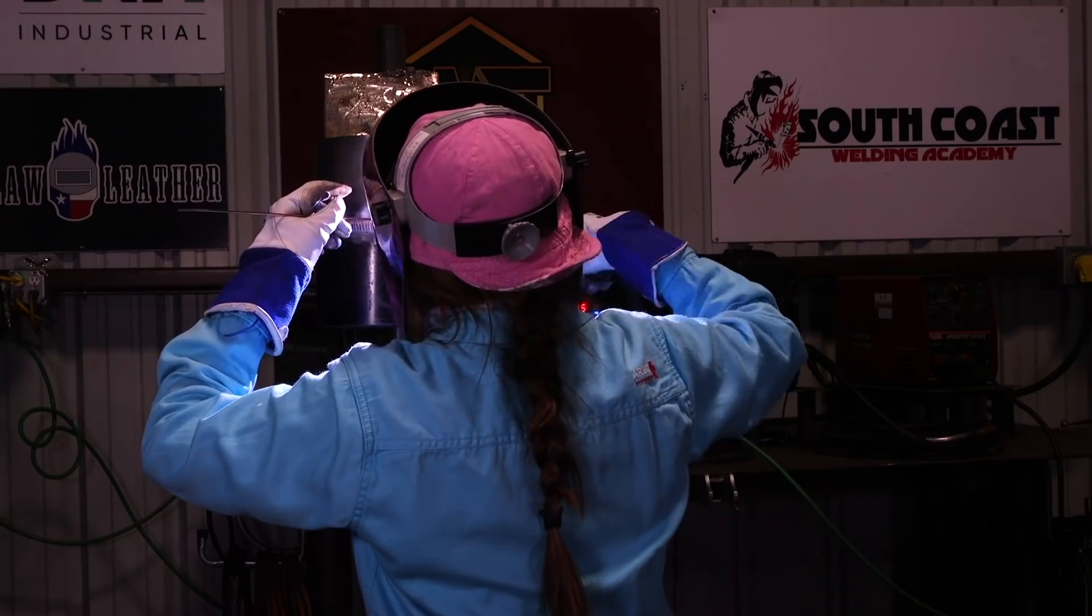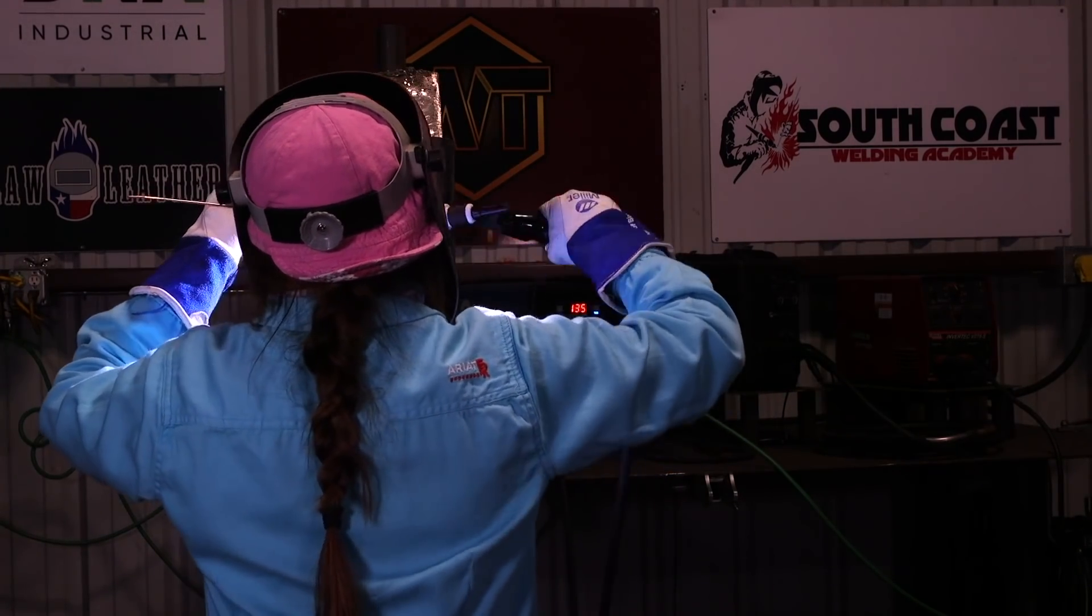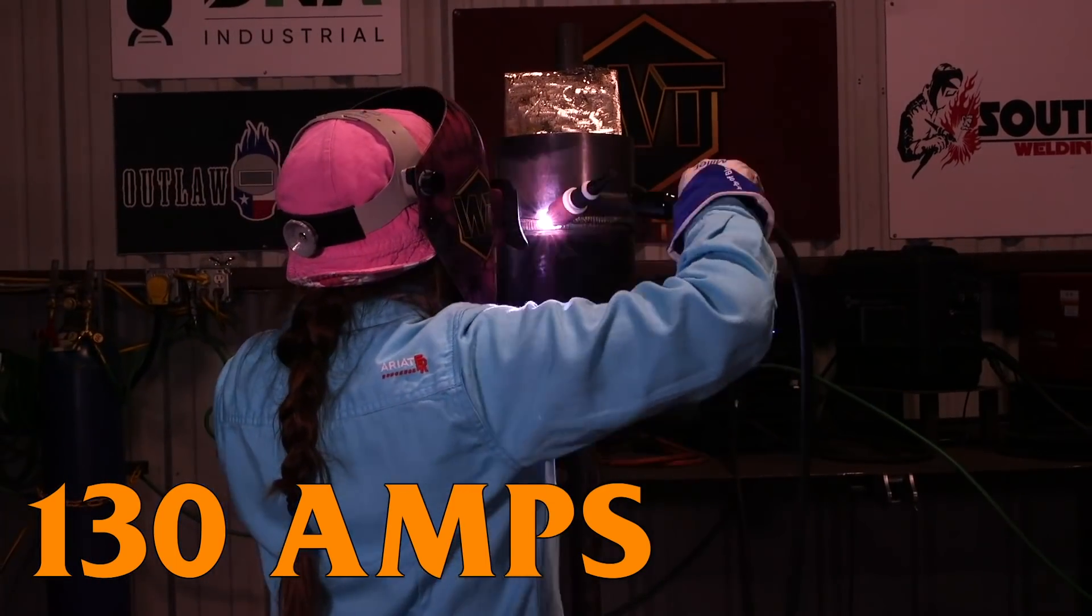Now that I'm on my second bead, I'm going to turn it down 10. I'm going to be at 130 amps, and the reason for that is because the pipe is already getting a little hot, and I want to prevent undercut.